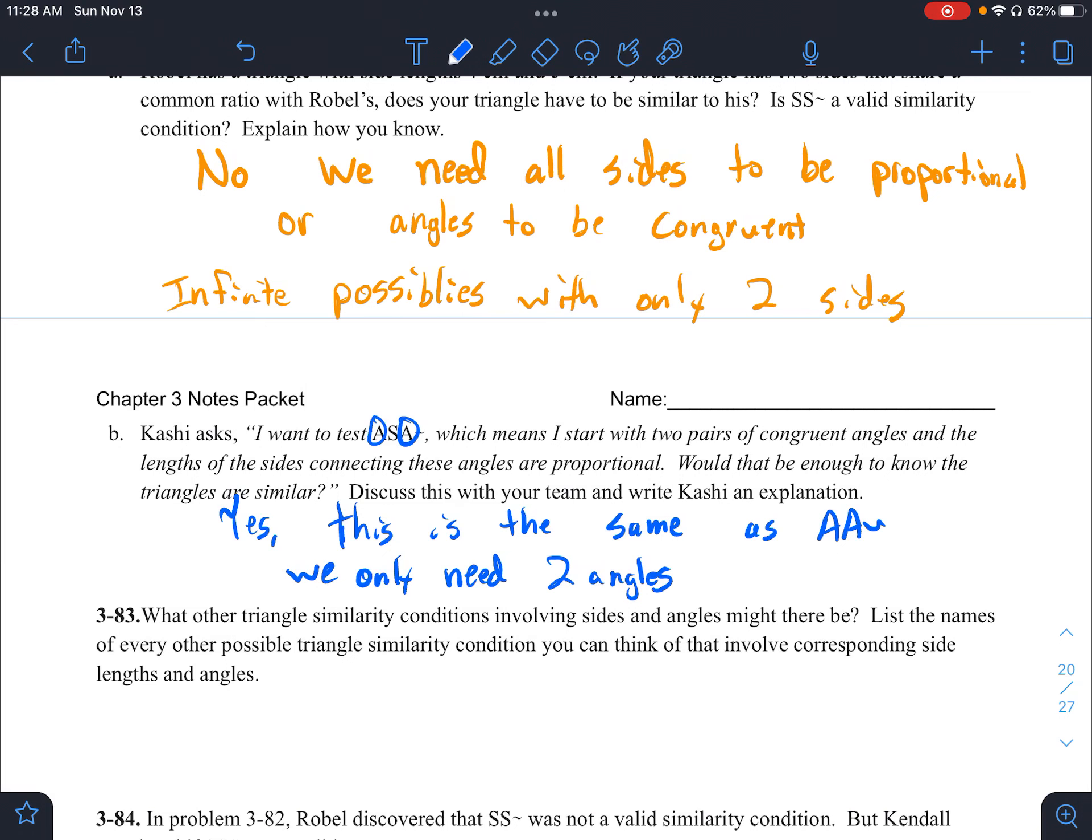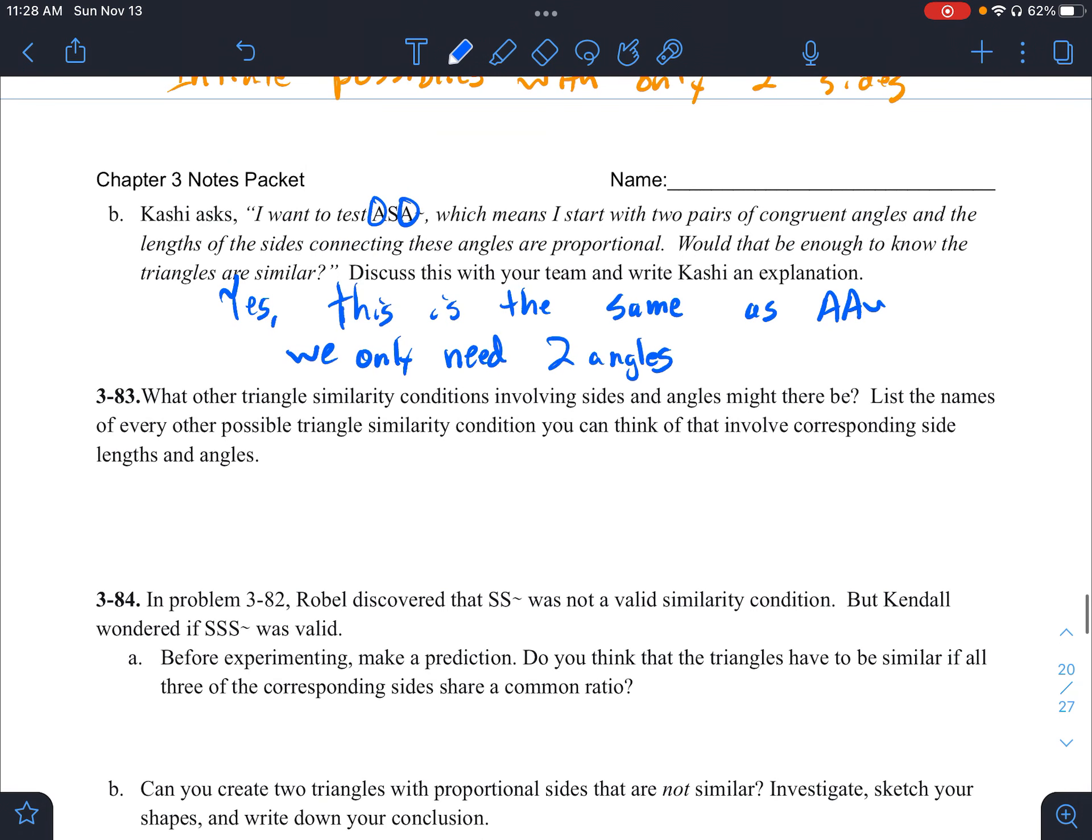So looking then at 83, it says what other triangle similarity conditions involving sides and angles might there be? List the names of every possible triangle similarity condition you can think of involving corresponding side lengths and angles. So right now there are really quite a bit of these. So go ahead and list as many as you think. This should just take a minute or two and then I'll check back in. So pause here, list as many as you can.